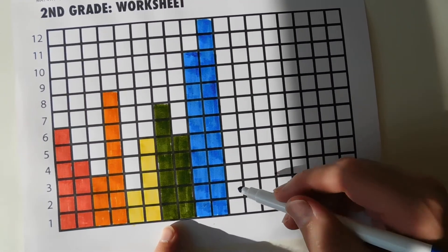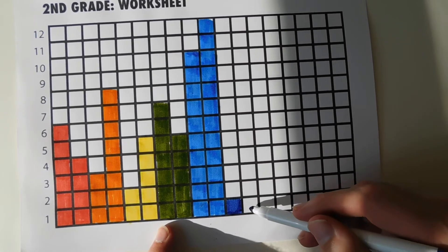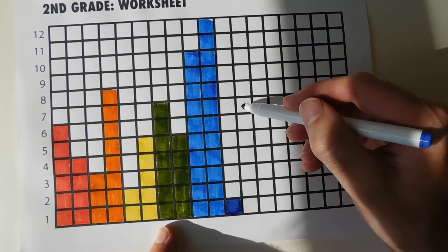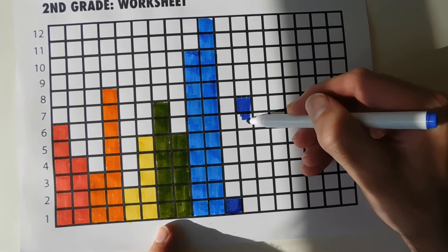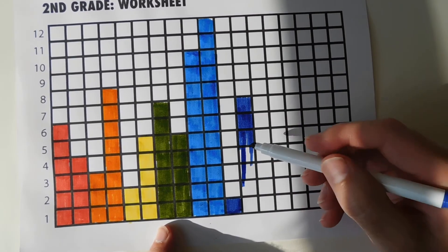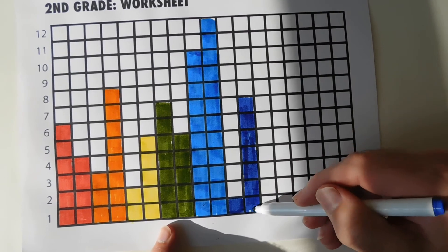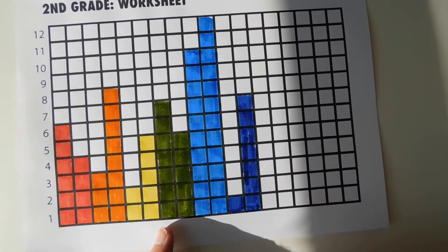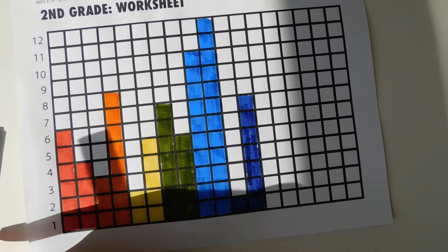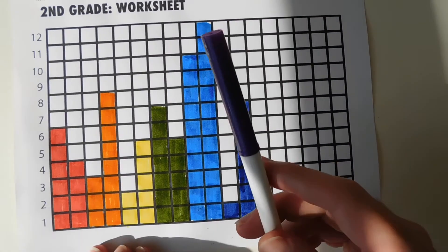And then the other one medium height, 7. Last one, last color of the rainbow. Red, orange, yellow, green, blue, indigo, violet.